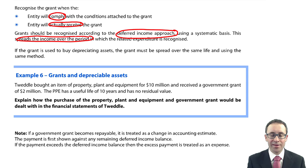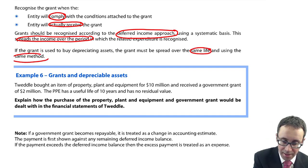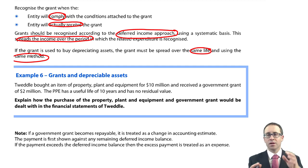Just a little paragraph there that talks about your depreciating assets. So if the grant that you get is for a capital grant, we've said that you spread the income over the period where the expenditure is released. So that's over the same life and using the same method. So don't apply different lives or different methods to depreciation and the release of the deferred income.